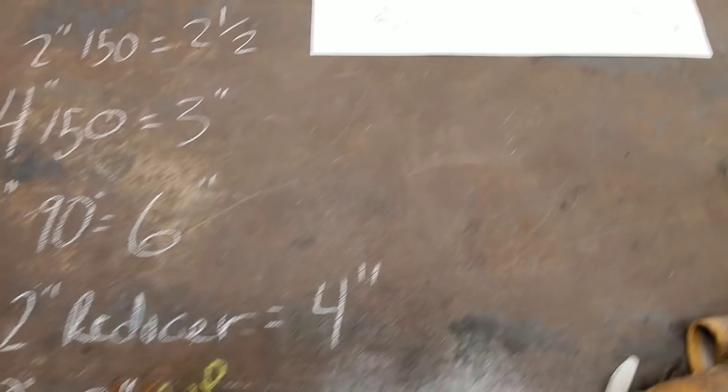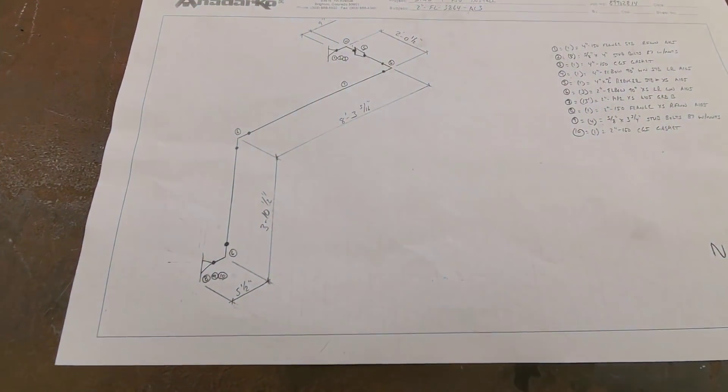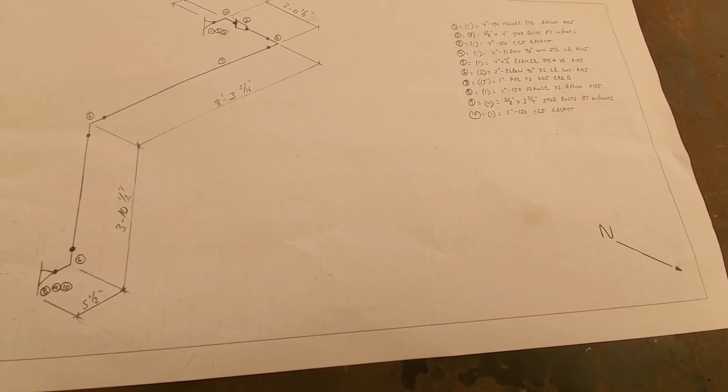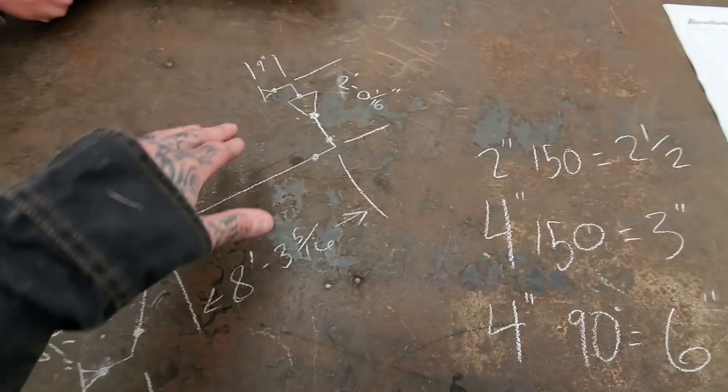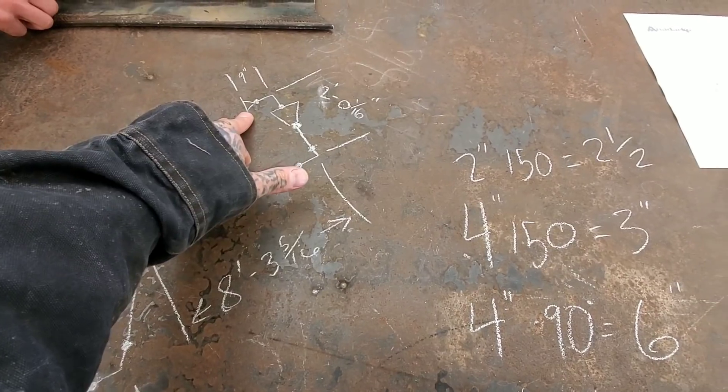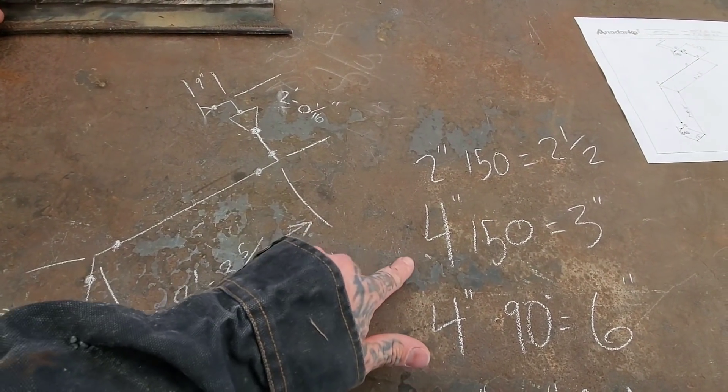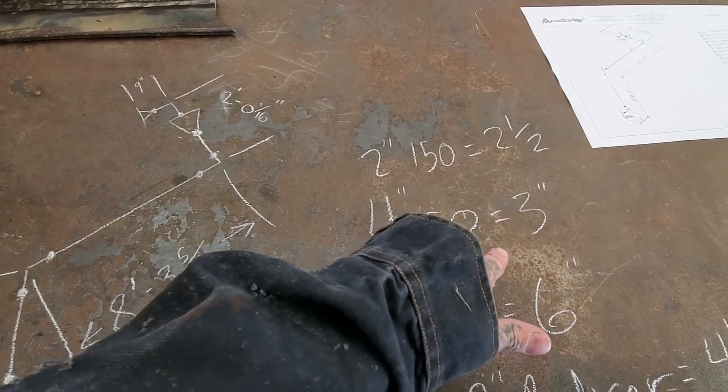I got all my measurements for my fittings on the table here. This is the ISO that I was given from the fitter. I kind of transferred it onto the table to show you guys. I'm telling you that's a 4 inch 150 and in my blue book it measures to be three inches.